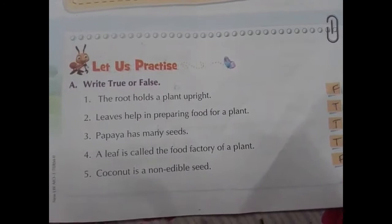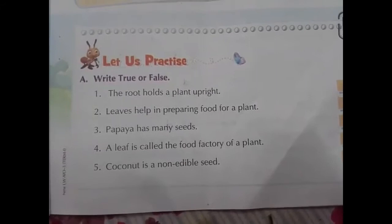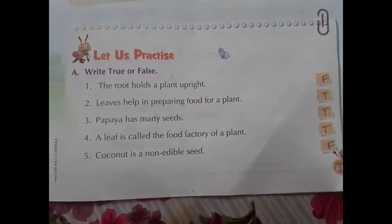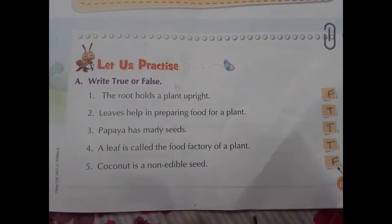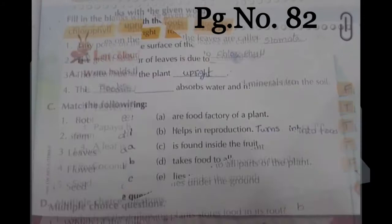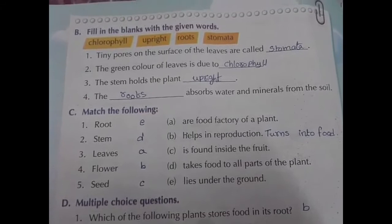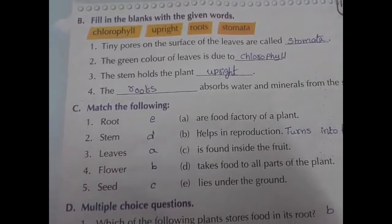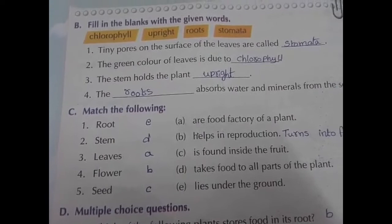Page number 81, true or false: The roots hold a plant upright — False, because the stem holds the plant upright. Leaves help in preparing food for the plant — True. Papaya has many seeds — True. A leaf is called the food factory of a plant — True. Coconut is a non-edible seed — False. Page number 82: Tiny pores on the surface of leaves are called stomata. The green color of leaves is due to chlorophyll. The stem holds the plant upright. The roots absorb water and minerals from the soil.